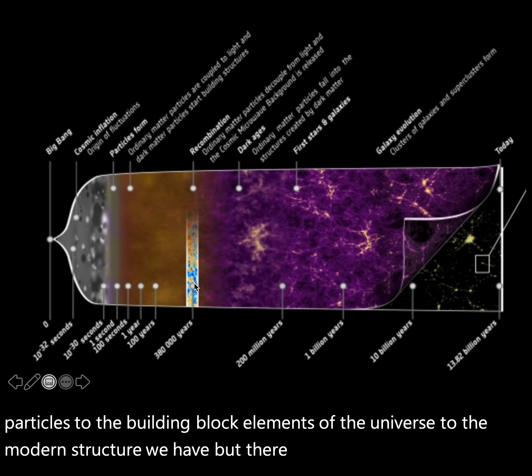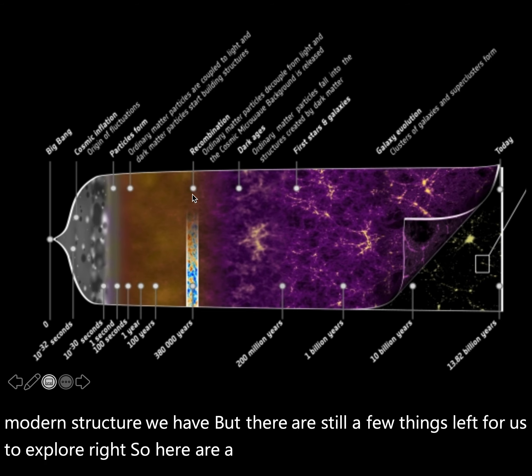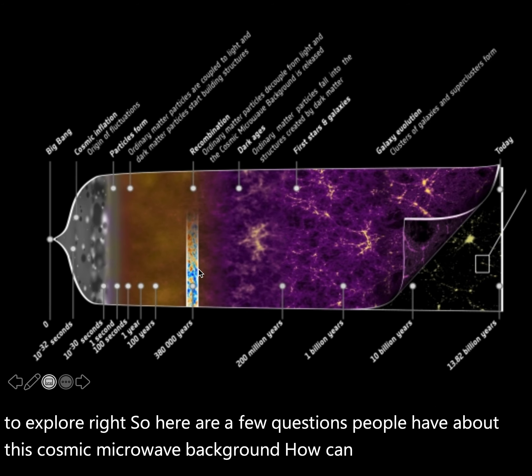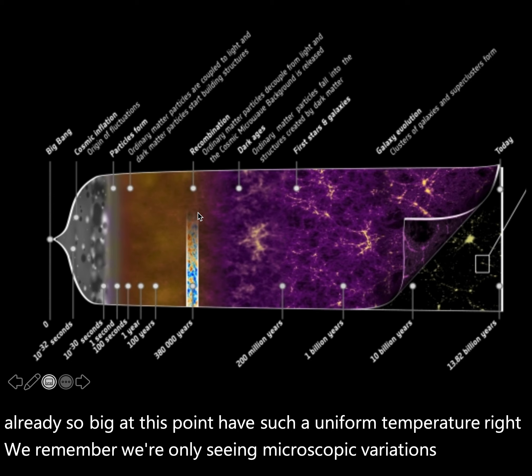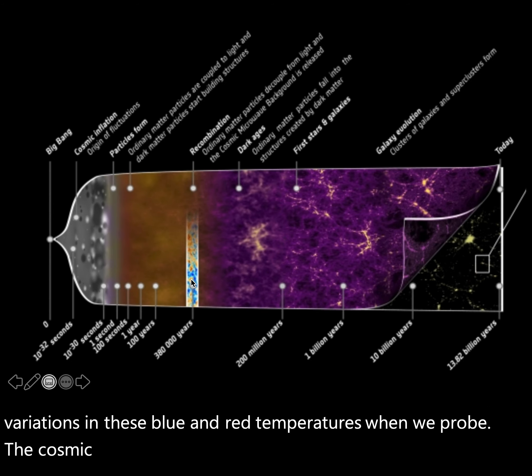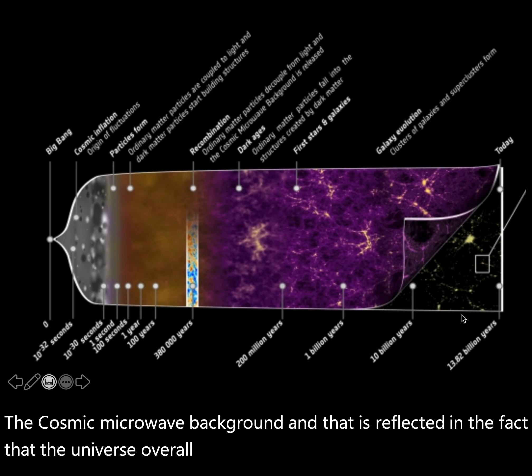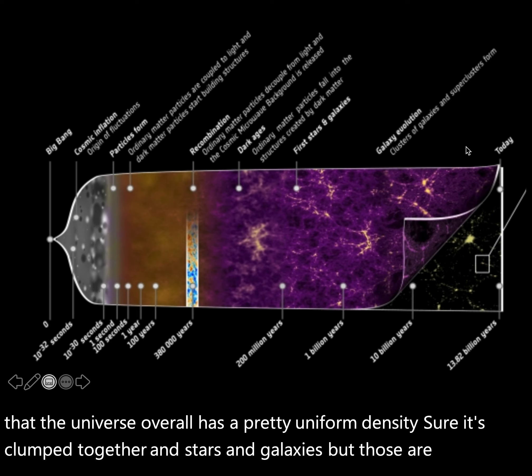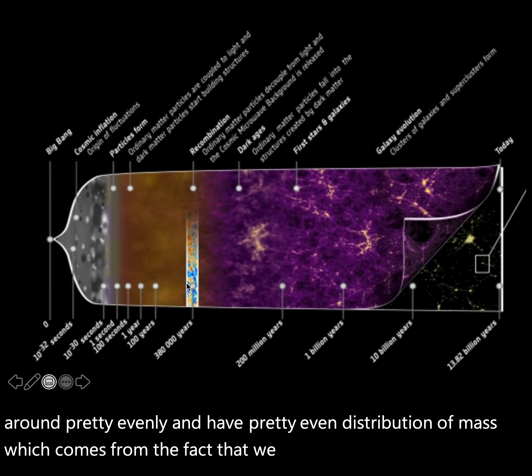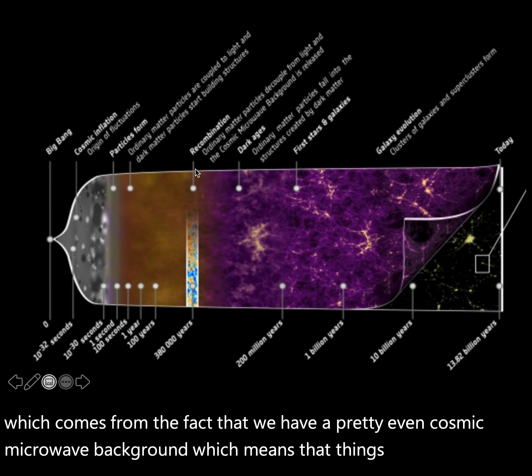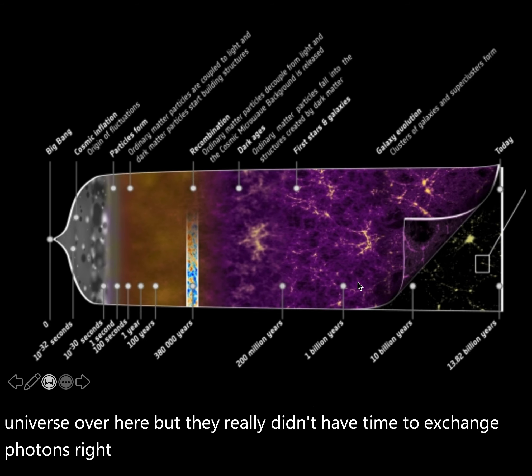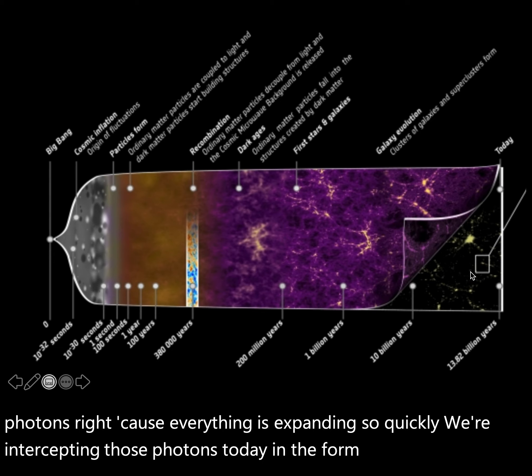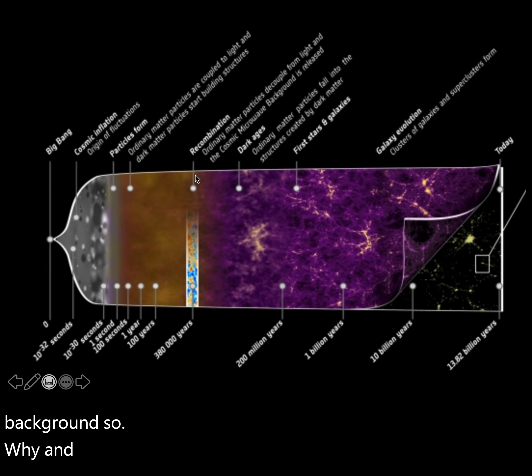But there are still a few things left for us to explore. Here are a few questions people have about this cosmic microwave background. How can the universe, which is already so big at this point, have such a uniform temperature? We remember we're only seeing microscopic variations in these blue and red temperatures when we probe the cosmic microwave background. And that is reflected in the fact that the universe overall has a pretty uniform density. Sure, it's clumped together in stars and galaxies, but those are spread around pretty evenly. And so we have a pretty even distribution of mass, which comes from the fact that we have a pretty even cosmic microwave background, which means that this part of the universe over here is the same temperature as this part of the universe over here. But they really didn't have time to exchange photons, because everything is expanding so quickly.